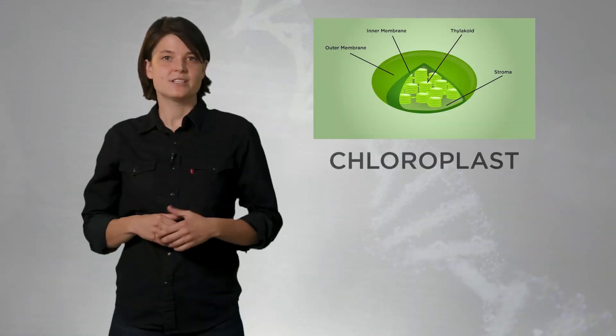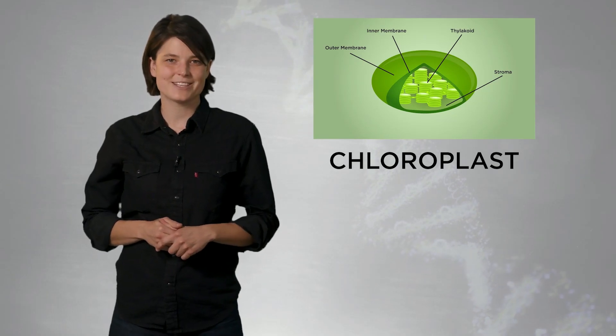While animals get their energy from food, plants and some other organisms, such as algae, have the ability to use sunlight to generate their own energy from carbon dioxide and water in a process called photosynthesis. To do this, they use an organelle called a chloroplast.